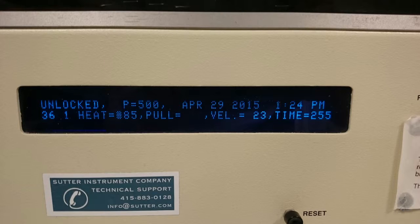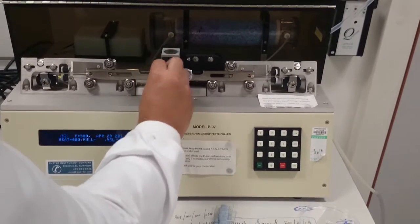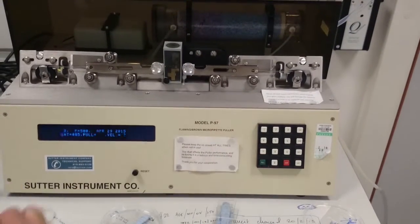Now, there are several settings on the tip puller we can use. It will be heat, pull, velocity, and time. These settings will be different for each filament. Therefore, the settings that I have here will be different on your instrument, and you can learn your settings through trial and error. When we're ready to pull, make sure both are tightened, and press the pull button.